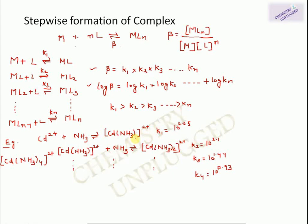The reasons for this decreasing trend are: first, steric hindrance increases as more ligand molecules are added. Second, if a ligand is charged, the charged ligands repel each other. Third, the probability of replacing a water molecule decreases as the number of ligands already attached increases. These are the reasons for the decrease in stepwise equilibrium constants, but there are a few exceptions.